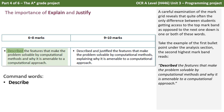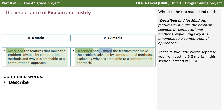Take the example of the first bullet point under the analysis section. The second highest mark band reads: 'described the features that make the problem solvable by computational methods and why it's amenable to a computational approach.' Whereas the top mark band reads: 'described and justified the features that make the problem solvable by computational methods, explaining why it is amenable to a computational approach.' And that's it — just those two little words, 'justify' and 'explain', separate you from getting six to eight marks instead of getting nine to ten.